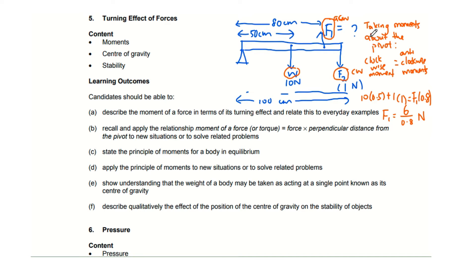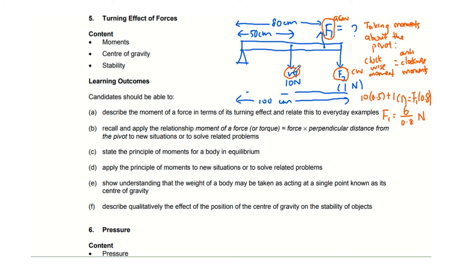What we are doing here is taking moments about the pivot and equating clockwise moment to anti-clockwise moment — that is applying the principle of moments. Once we have formed this equation, we find the individual clockwise and anti-clockwise moments using the moment formula: force times perpendicular distance. This is how you apply the principle of moments to questions.